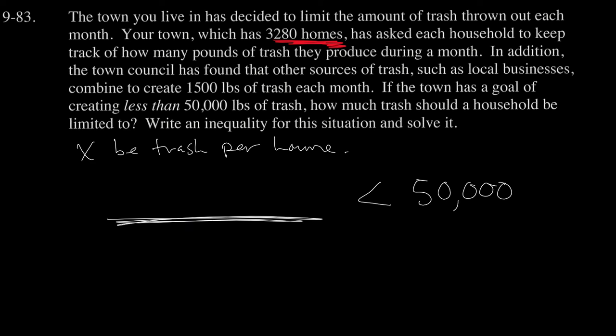We also know that there's a fixed trash rate of about 1,500 pounds from sources such as hospitals, local businesses, and city hall. So there's trash produced by other places, and that's 1,500 pounds. It's a linear relationship here, so we're looking at 3,280 homes each producing x pounds of trash, plus this 1,500 pounds of trash that comes from other sources. Together, that has to be less than 50,000.